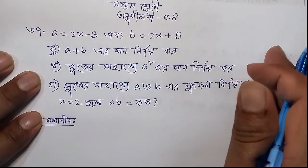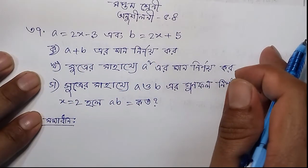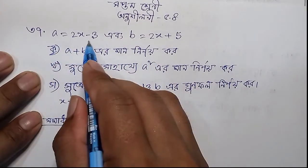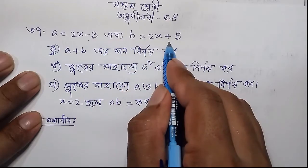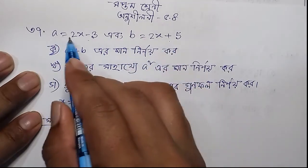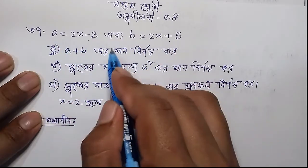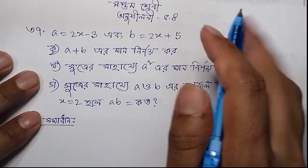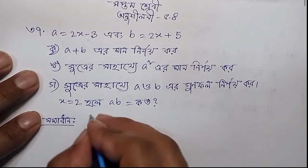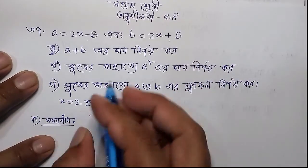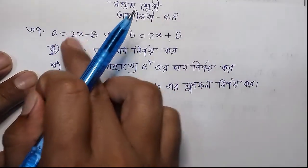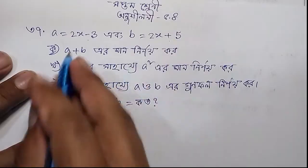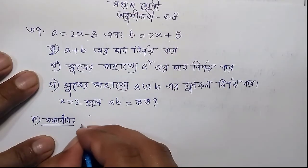First, we need to find the value of a plus b. To find a plus b, we will write it out. So first, let us write a plus b and solve it step by step.